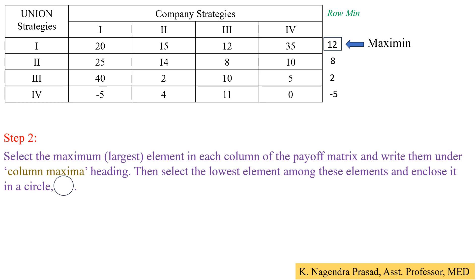Step 2: Select the maximum element in each column of the payoff matrix and write them under the column maxima heading. Then select the lowest element among these column maxima and enclose it in a circle. This smallest column maximum is the minimax value.